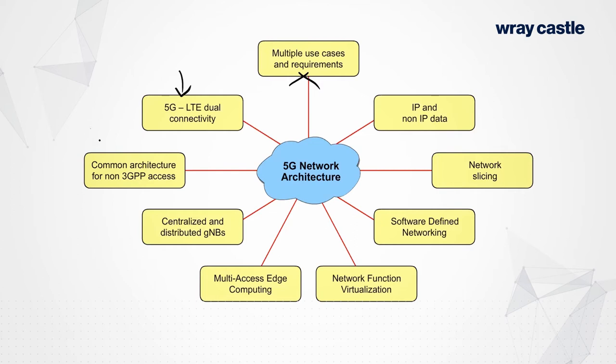We would, of course, like to interwork with so-called non-3GPP access as well. We always say non-3GPP, but really what we mean by that is, for the most part, Wi-Fi — but it doesn't matter what it is. It could be Bluetooth, it could be some sort of IoT protocol. The 5G network architecture, like 4G before it, and to a certain extent 3G before that, we always have the means to allow some degree of interworking.